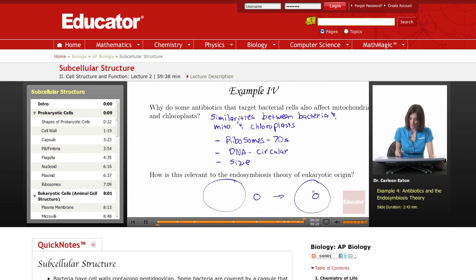And the fact that mitochondria and chloroplasts are similar to bacterial cells provides support for this endosymbiosis theory of eukaryotic origin. Thanks for visiting educator.com. And that concludes this lecture on subcellular structure.